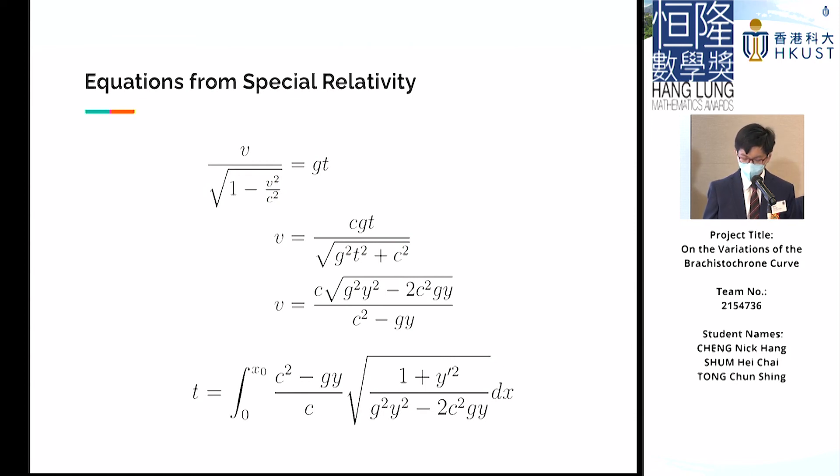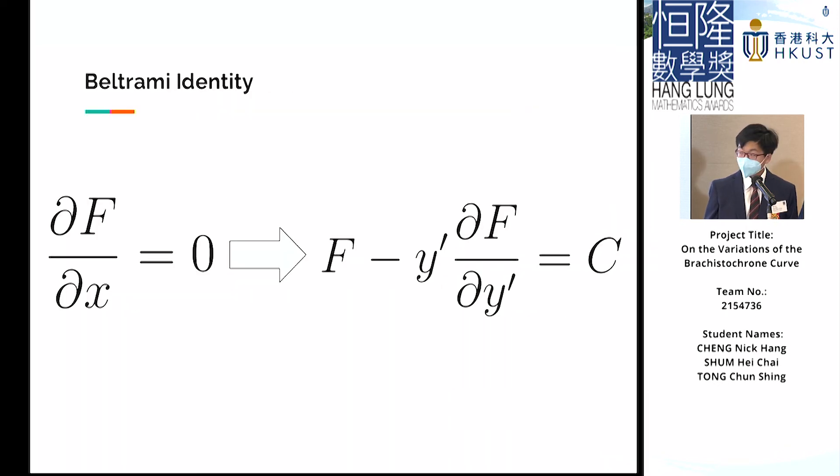Then using this velocity and ds/v, we obtain yet another integral. When applying the Euler-Lagrange equation, we can apply the Beltrami identity. The Beltrami identity can be used in place of the Euler-Lagrange equation when the integrand f is independent of x. Then the equation on the right would hold true.